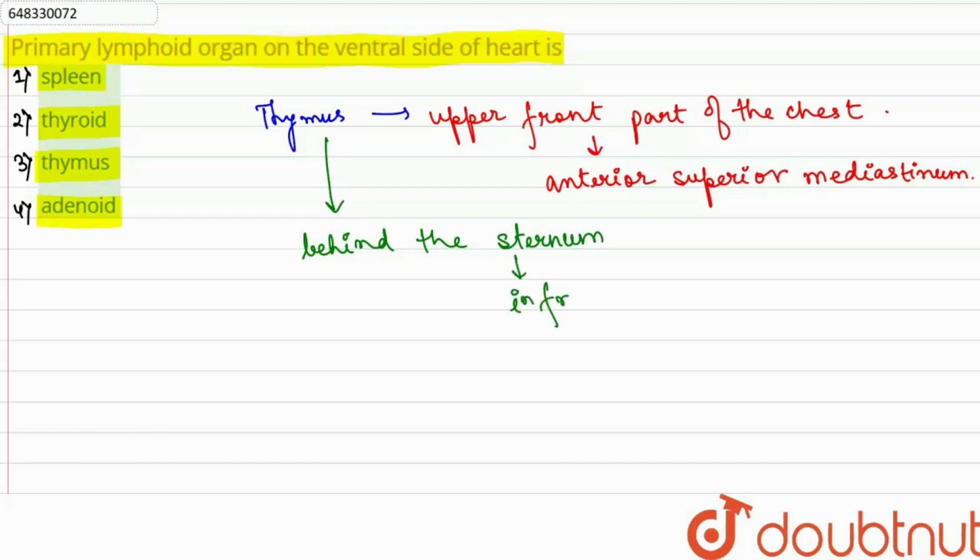In front of the heart, this thymus contains two lobes, and each contains a medulla and an outer cortex.